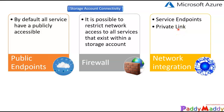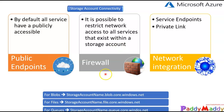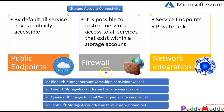The third option is network integration, where you can use service endpoints or private links. Instead of your storage account traffic routing through different ISPs, you can use the Microsoft backbone for higher speed and secure connectivity. All traffic uses Microsoft's internal backbone to connect to your storage account.